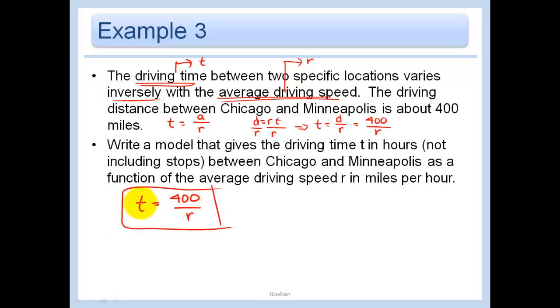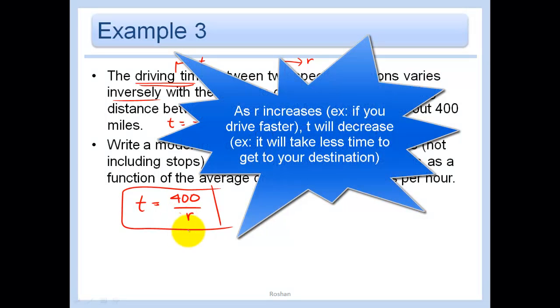And it would make sense that we had inverse variation here because the faster you go, the larger your average driving speed is, the less time it's going to take you, right?